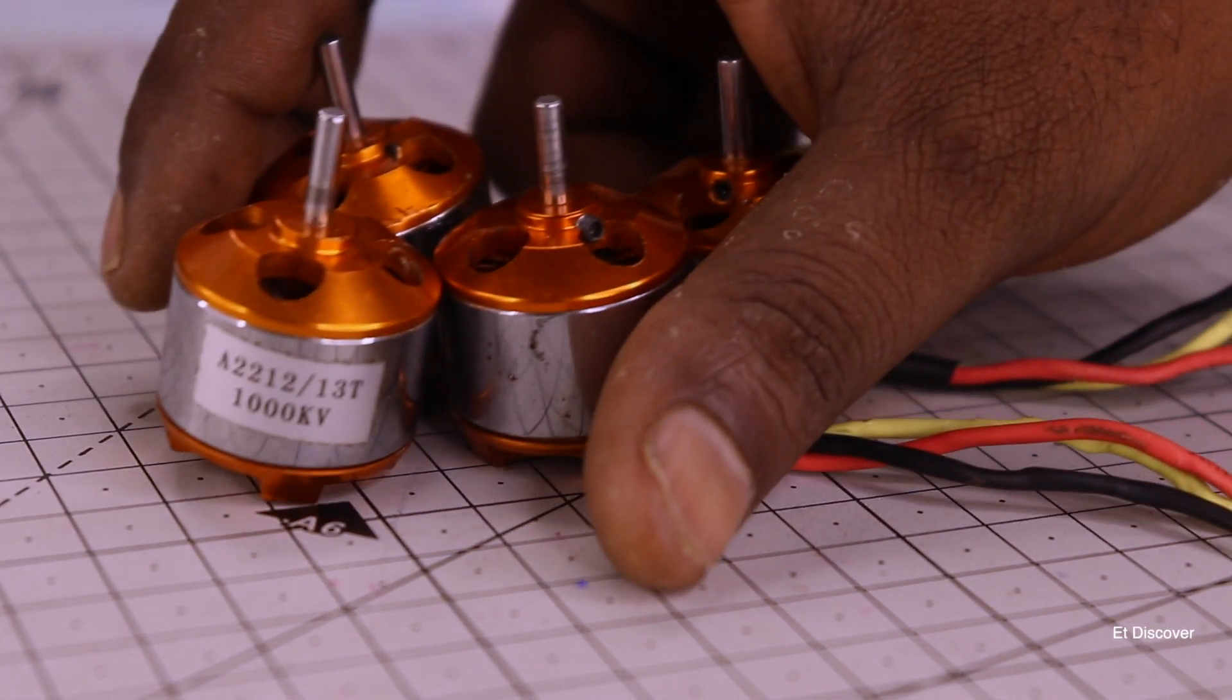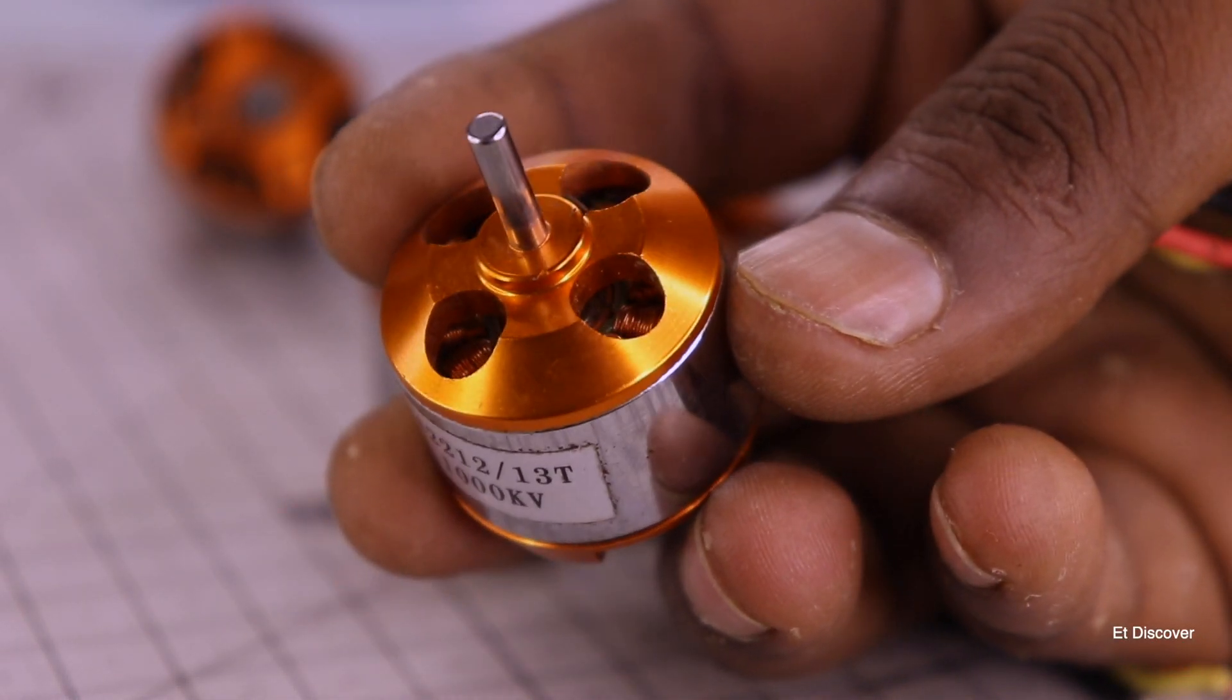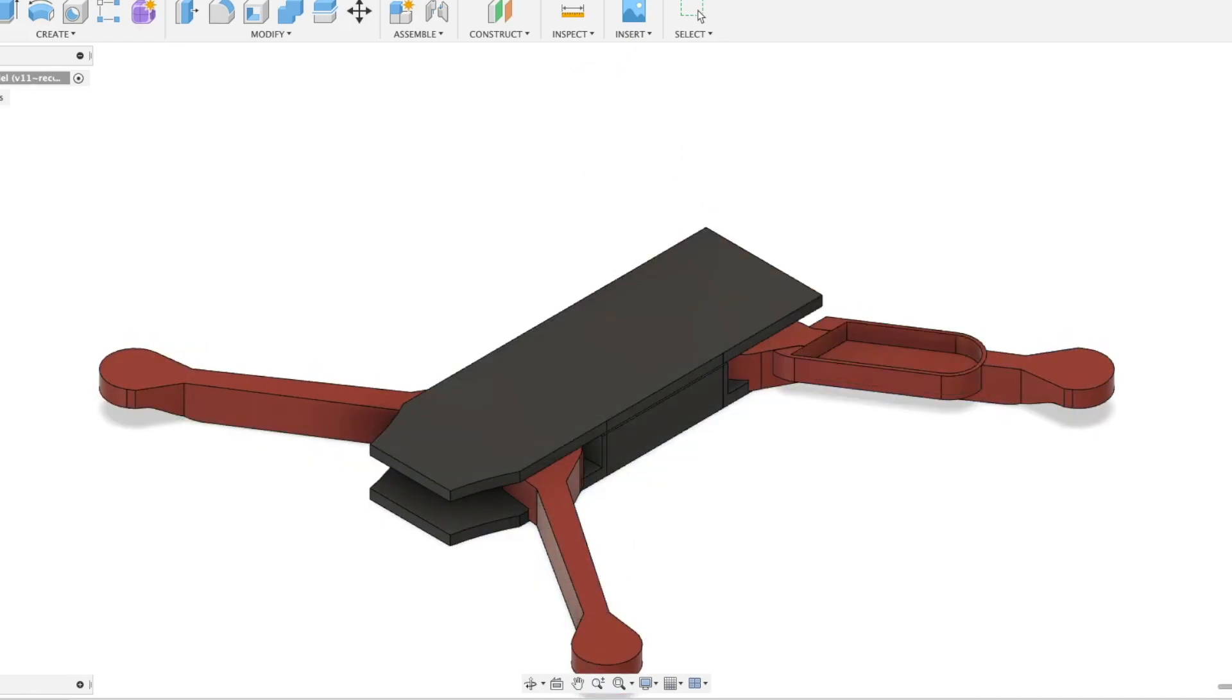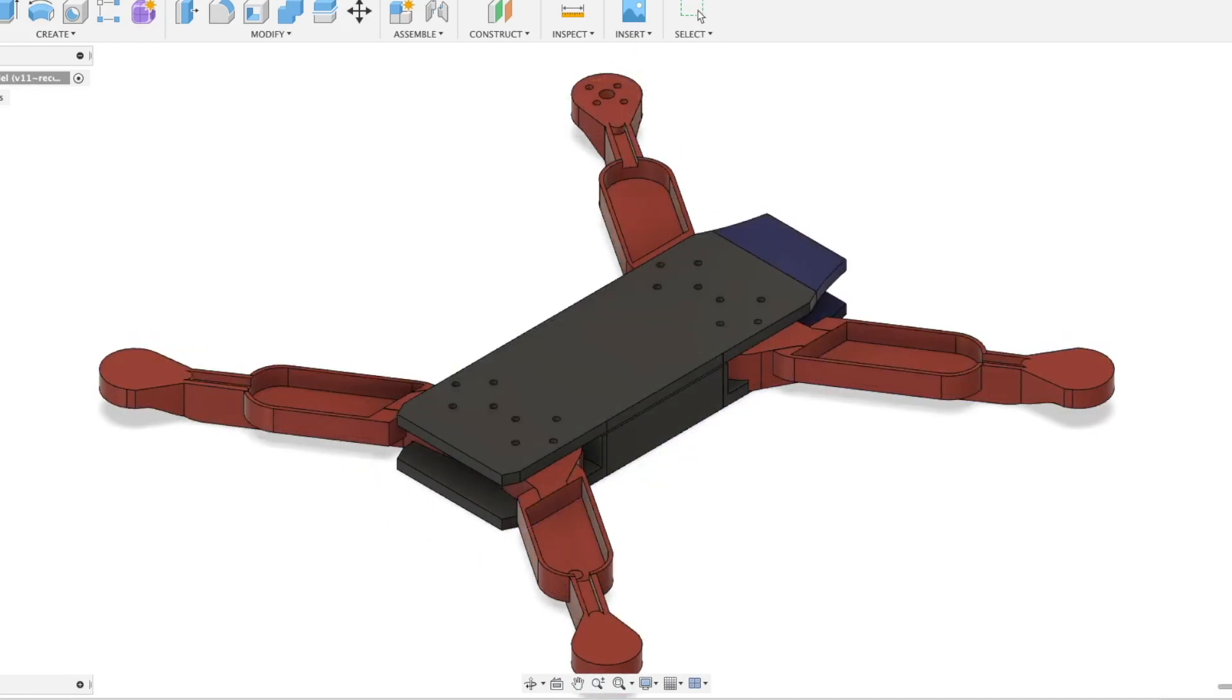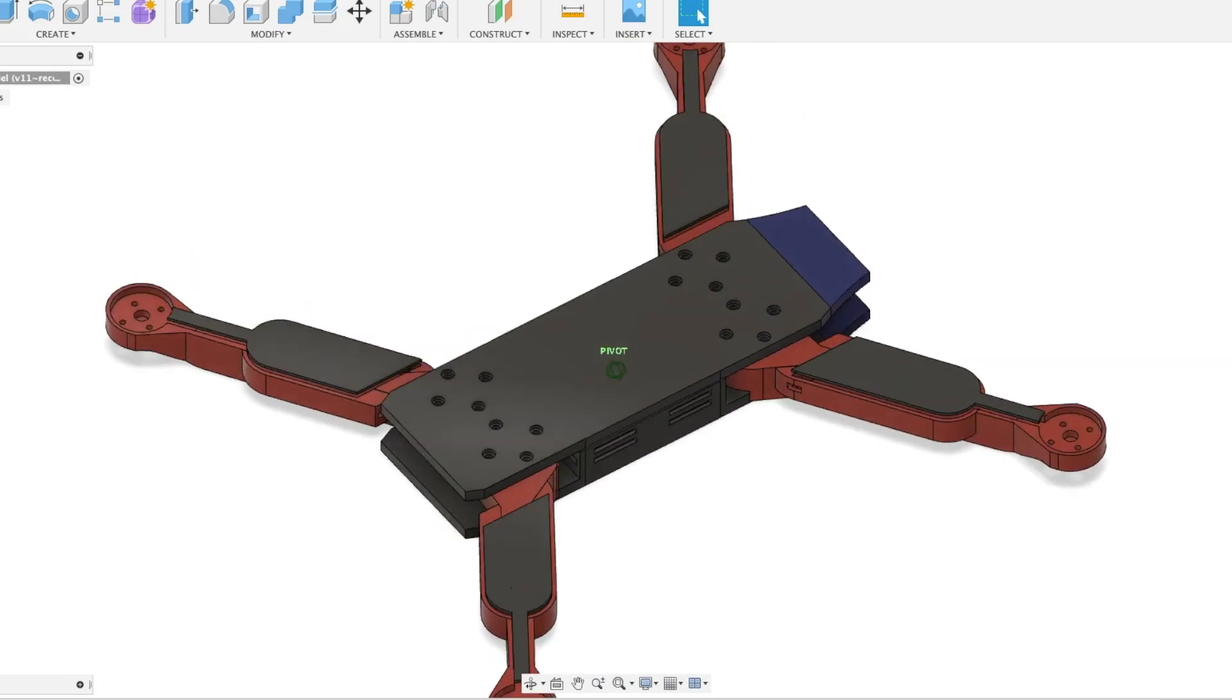Since I am using 1000KV motor here, I want my drone body to be strong enough and at the same time light enough. That is why I will try to make a beautiful 3D model of my drone. And it took me about 3 to 4 days to make it. You will get the STL file in the description box like you always get.